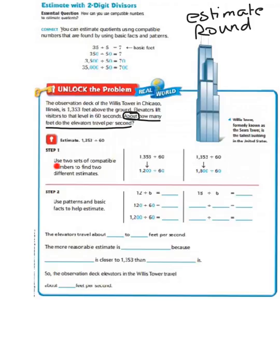So, let's estimate 1,353 divided by 60. We're going to use two sets of compatible numbers to find two different estimates. So we're looking for basic facts. And if we look at the first two numbers, 13 and the 6 in 60, we see that that does not go in together. But a basic fact that is close to 13 is 12. So we could round 1,353 to 1,200. And we have our basic fact of 12 divided by 6.